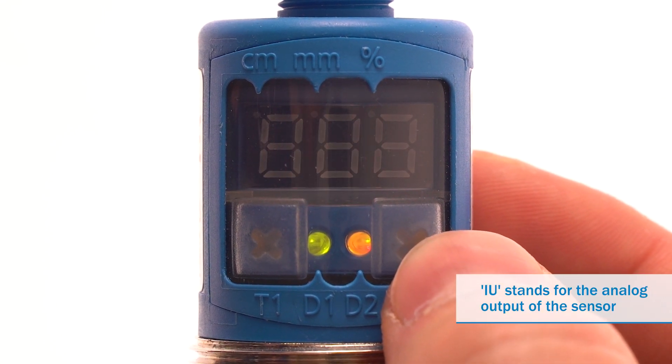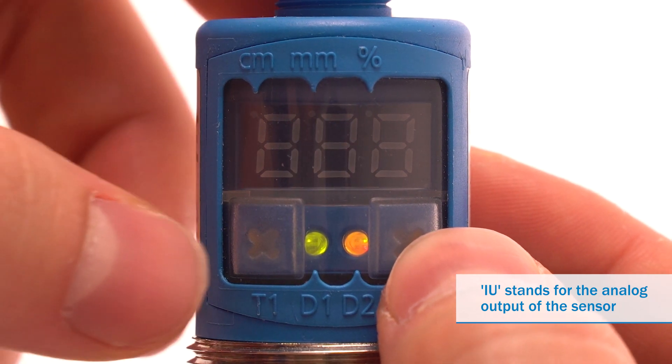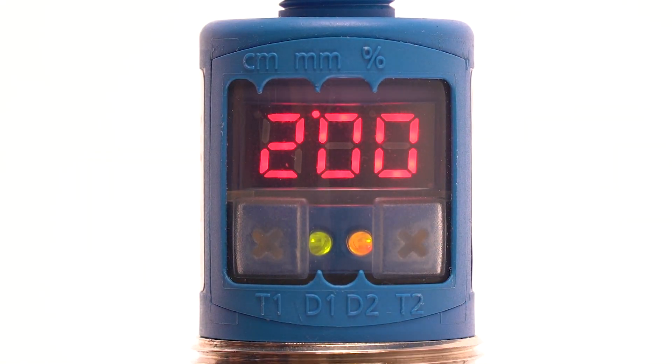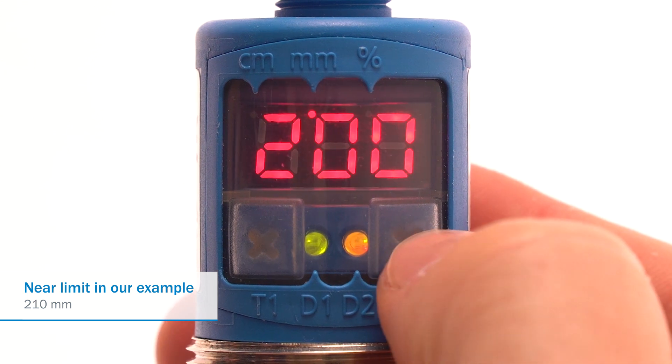Simultaneously press T1 and T2 again, and now set the near limit of the analog output scaling in millimeters or centimeters.